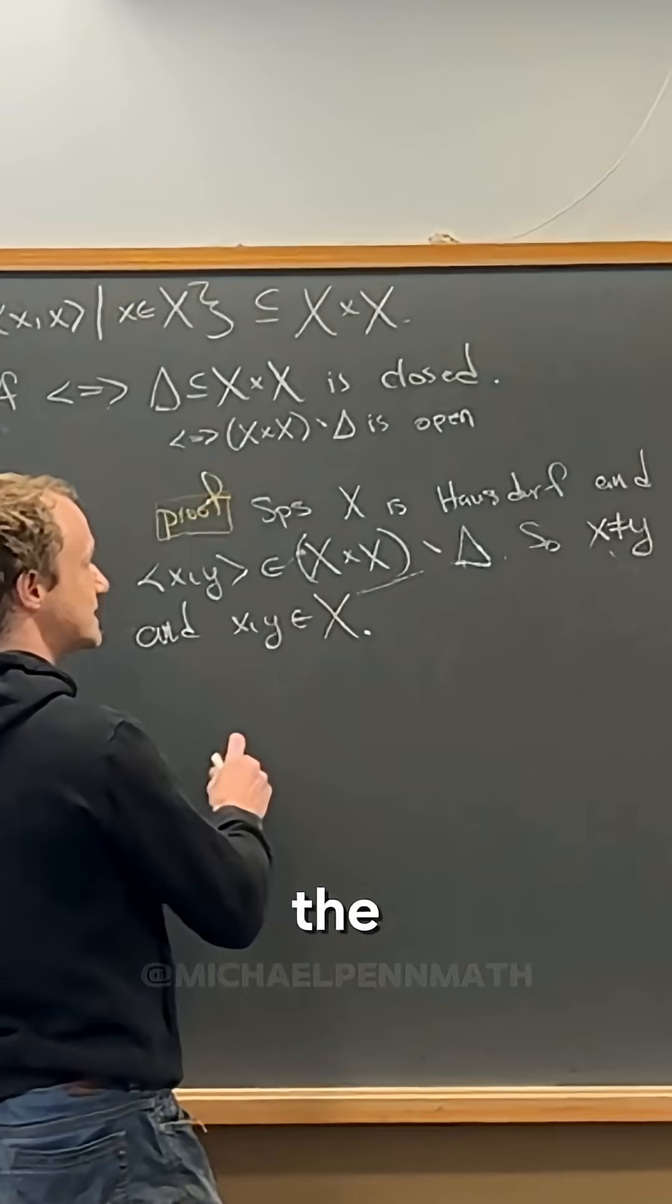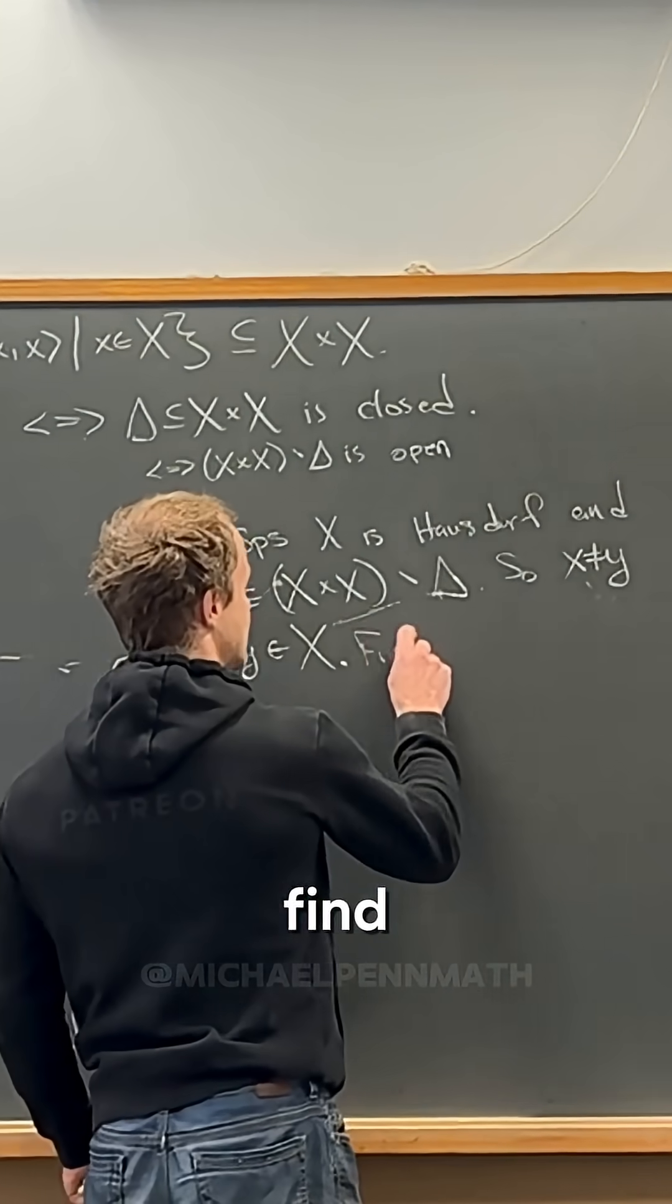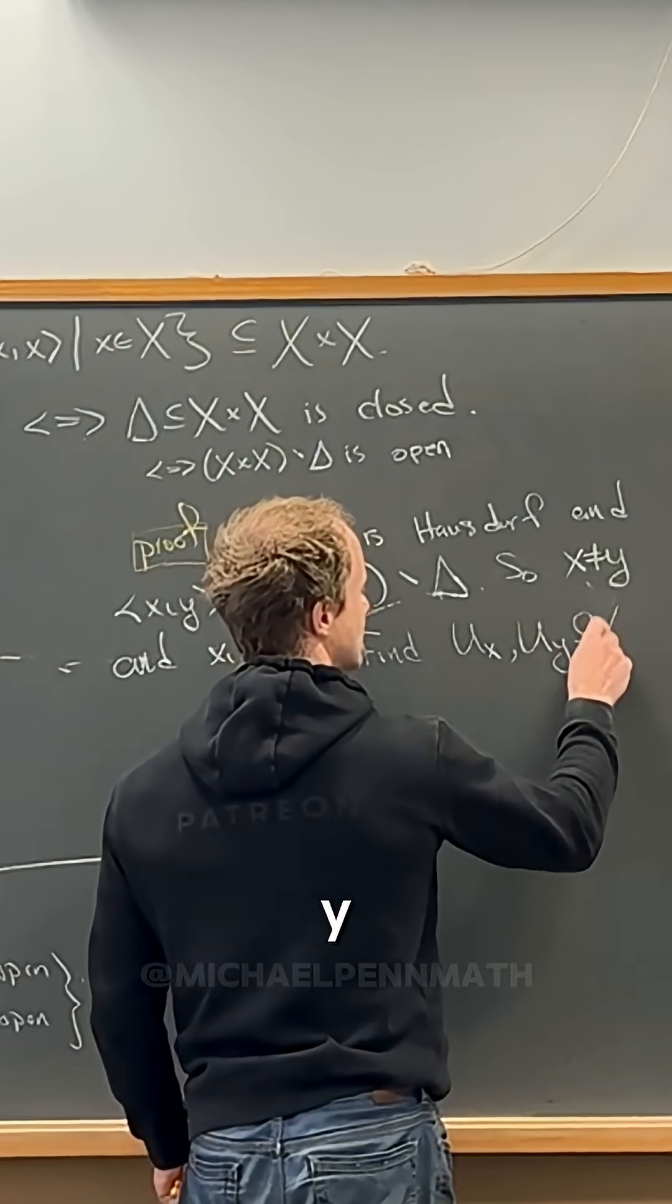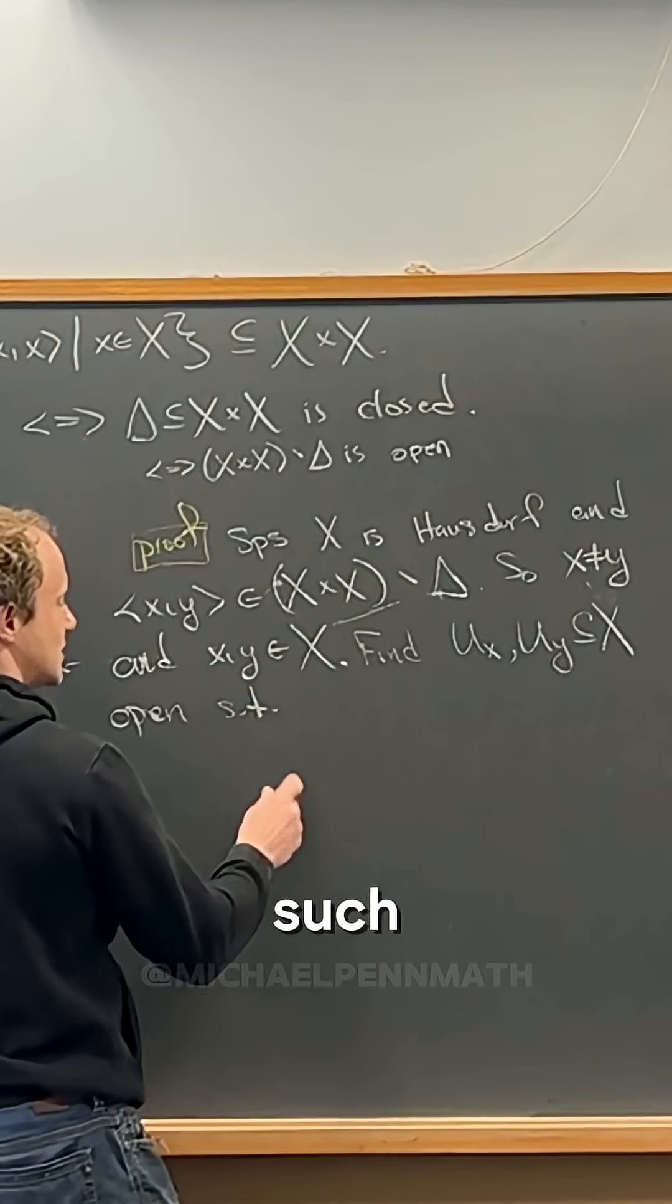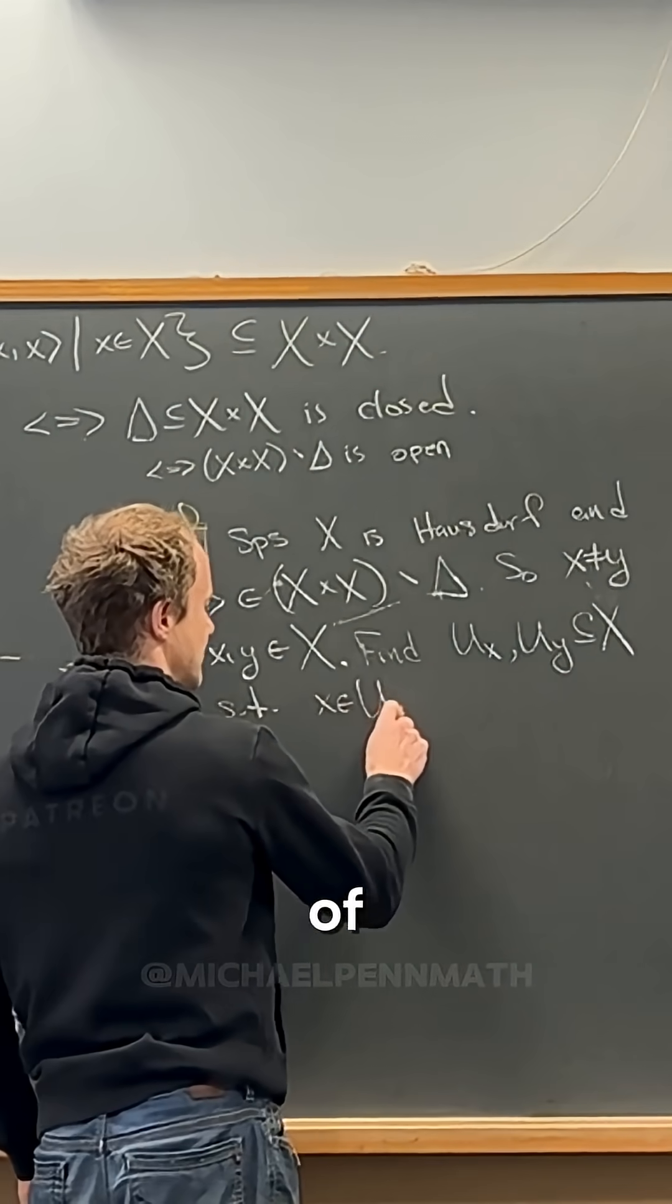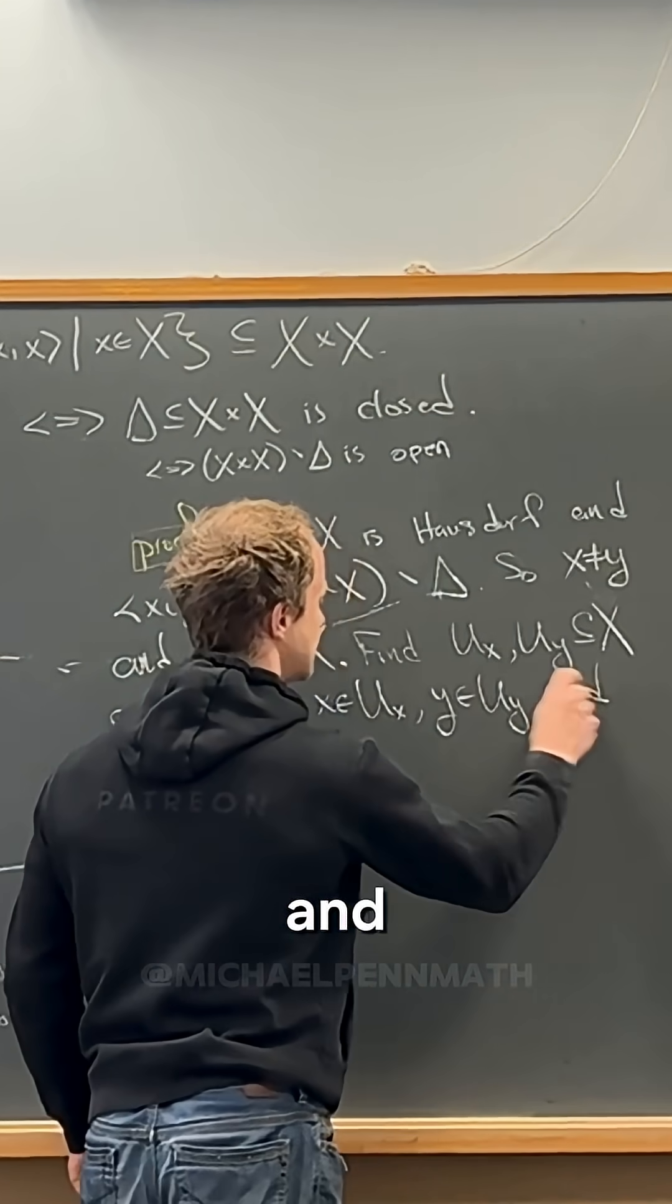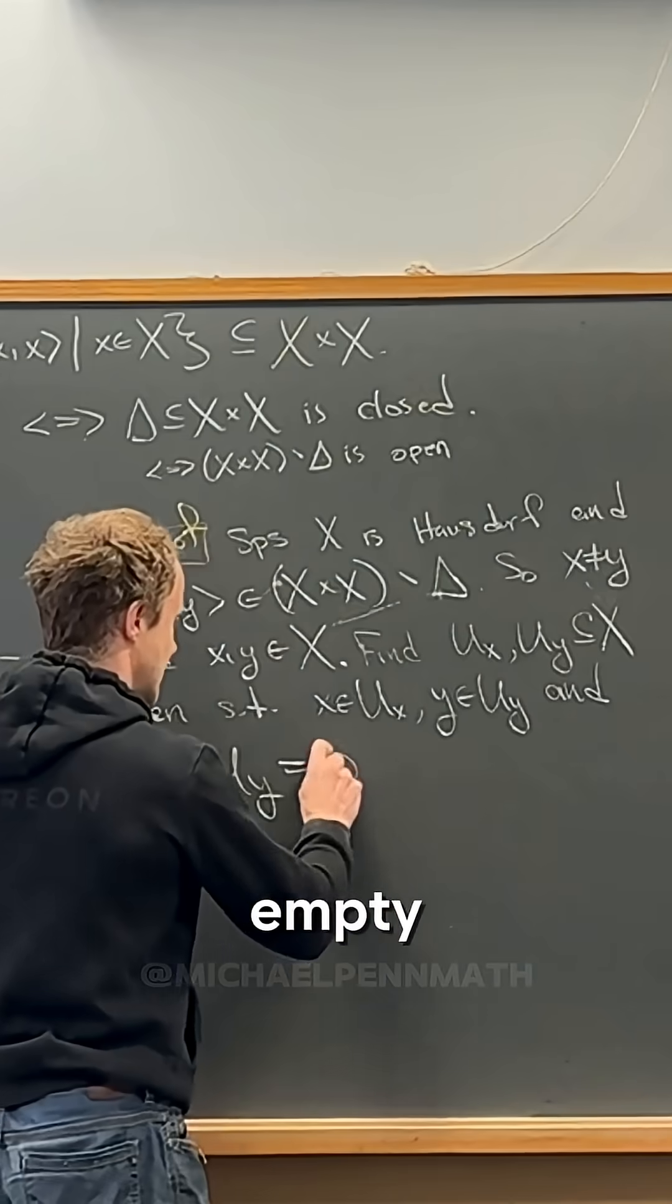So now use the Hausdorffness of X. So let's find u sub x and u sub y open in X such that x is an element of u sub x, y is an element of u sub y, and u sub x intersected with u sub y is empty.